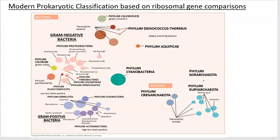You start out with your ribosomal RNA genes and can break them up into different divisions. Other people are using gram-negative and gram-positive cells, looking at cell wall differences. Once you have those categories set up, you can start to move on to different kinds of categories.